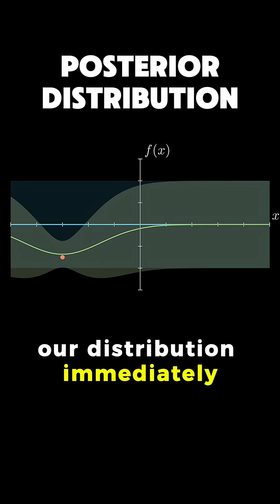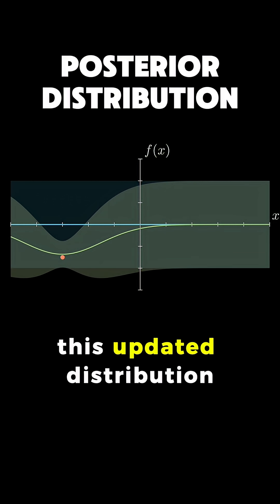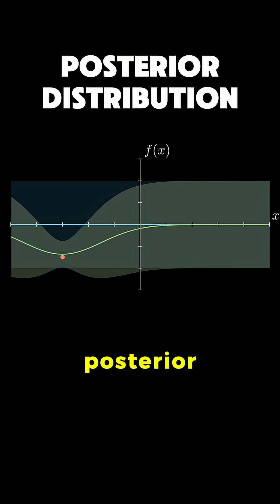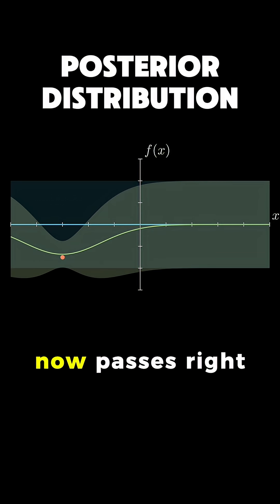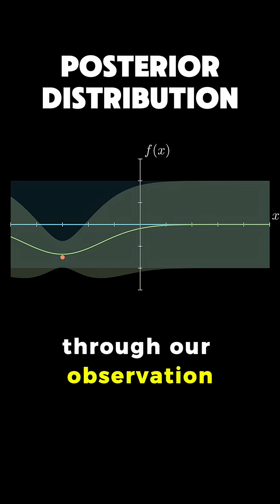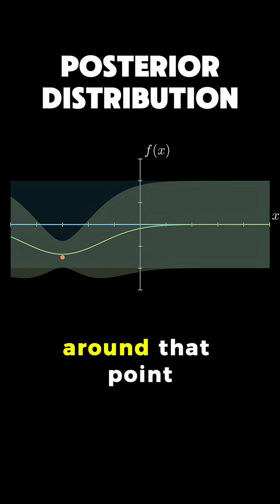Our distribution immediately changes to accommodate this new information. This updated distribution is called the posterior. Look at how the green line, our mean prediction, now passes right through our observation and the uncertainty bands shrink dramatically around that point.